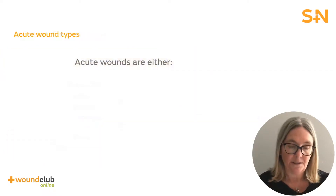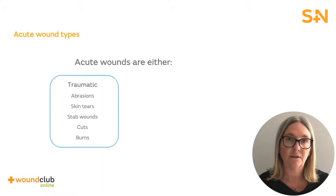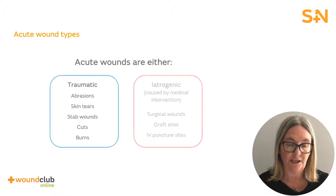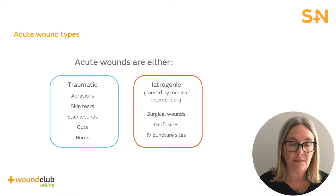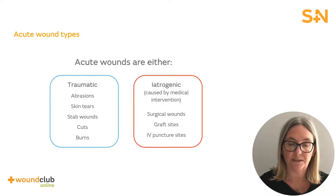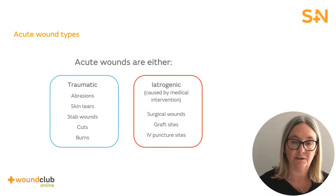Acute wounds can be defined in two categories: either traumatic or iatrogenic. Traumatic wounds are unintentional, with some examples being abrasions, skin tears, and burns. Medical intervention will sometimes result in acute wounds and these are known as iatrogenic wounds. Examples of these are skin grafts and IV puncture sites.